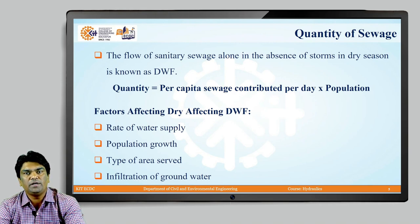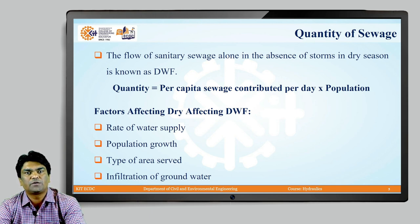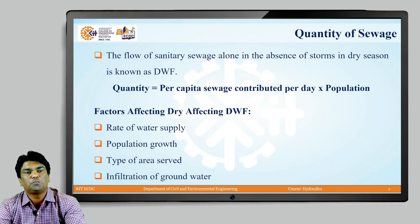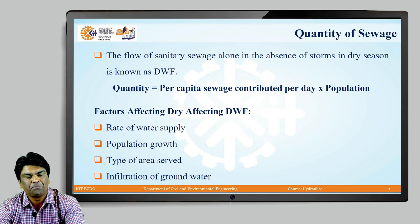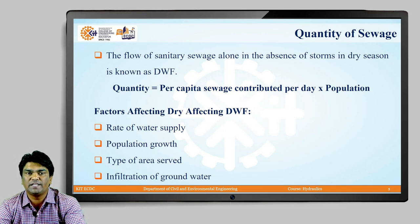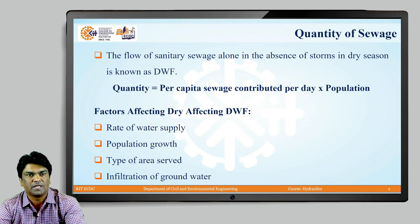The flow of sanitary sewage alone in the absence of storm in dry season is known as dry weather flow. The quantity of dry weather flow equals per capita sewage contributed per day multiplied by population. We first predict the population at the design period, find the average water demand, and then determine sewage quantity — since generally 70 to 80 percent of total water supplied is converted into sewage. Multiplying the per capita average by total population gives the total average sewage flow.